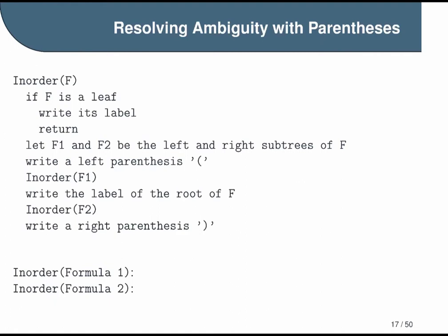So we now need to figure out a way of avoiding this kind of ambiguity. And one simple approach is to modify our procedure to add parentheses. In particular, we can make sure we always write an open parenthesis before we call in order on our left child and a close parenthesis after we call in order on the right child. After we implement this modification, now we end up with unambiguous string representations. This is something you would actually have to prove, but I'm asking you to take it as a fact for now.